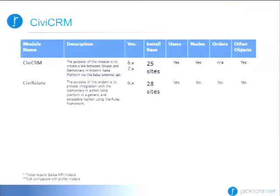CiviCRM has 6x and a port to 7x. According to Drupal.org there's only 25 sites, which doesn't compute — I'm sure there are a lot more Drupal sites integrating with CiviCRM. Civi has been integrated with Drupal since close to the beginning, and it's a very tight integration. Civi actually renders all the forms, so technically that's not integration per se — but you can integrate users and nodes into Civi. I don't know if there's really custom object support.